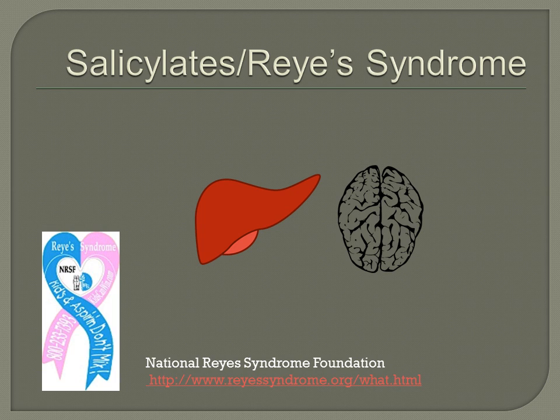Reye's syndrome is a rare but very serious condition that causes swelling in the liver and severe increase of pressure in the brain. Unless this disorder is diagnosed and treated, death is common, often within a few days. Reye's syndrome most often affects children and teenagers recovering from a viral infection, most commonly the flu or chicken pox. Research has established a link between Reye's syndrome and the use of aspirin and salicylate-containing medications, both over-the-counter and topical products.